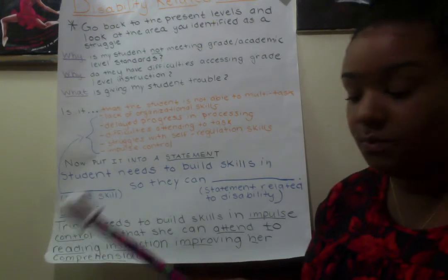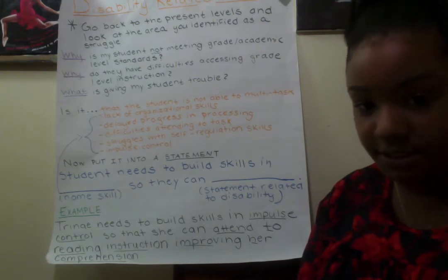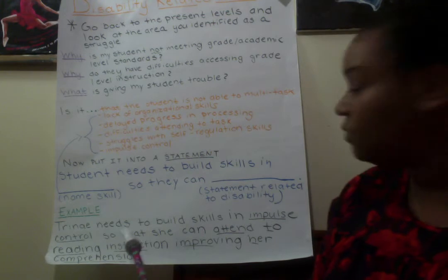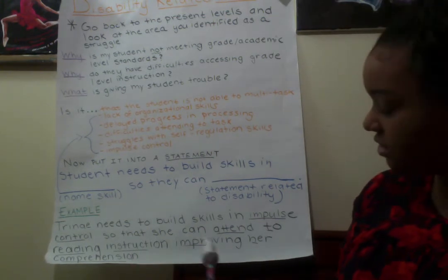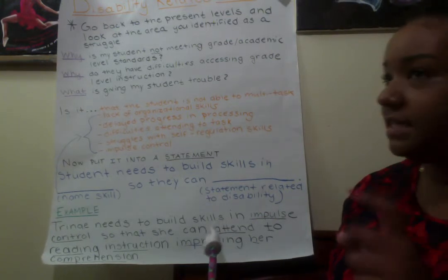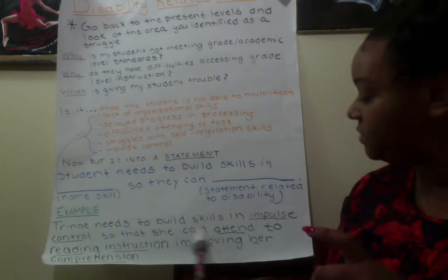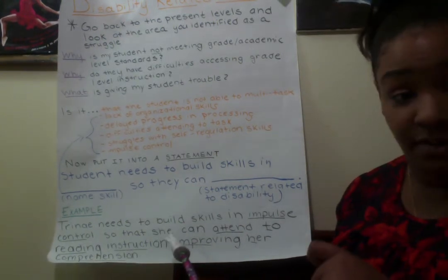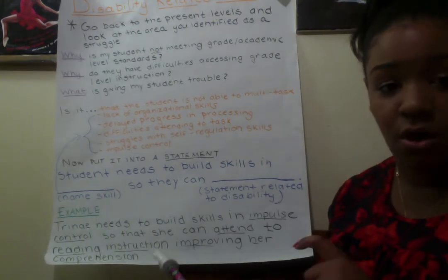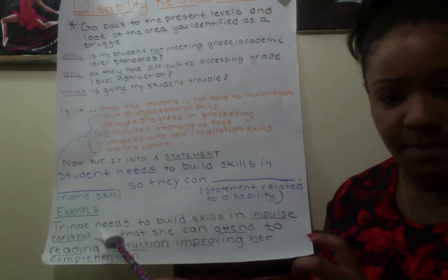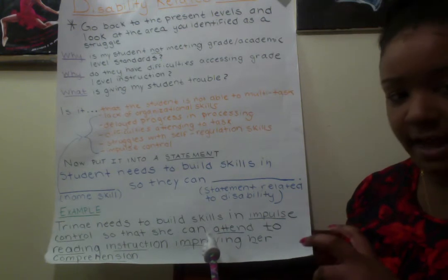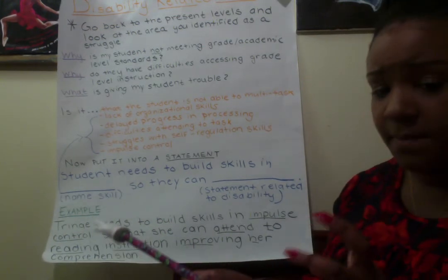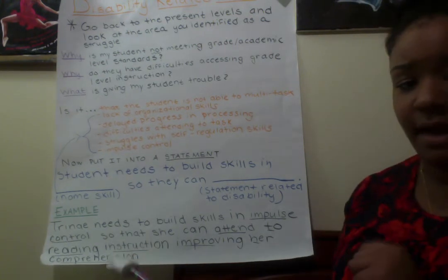Remember, we go back to the present levels — what was it she was not able to do? Answer WH questions — that's a comprehension thing. Notice how I put 'in order for her to attend to comprehension' as the statement related to disability. I don't need to say 'so that she can answer WH questions 50% of the time' — that specificity goes into the goal. The disability related need is simply: what is causing my student trouble, and what is it affecting in her academics? Here it's affecting comprehension — I was specific in the present levels, but for this statement, comprehension is all I need.